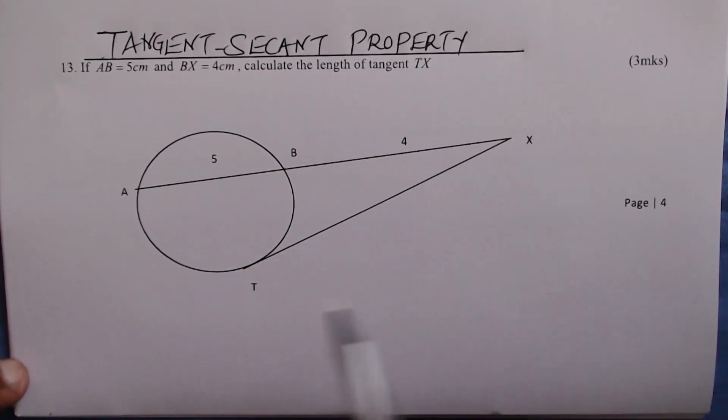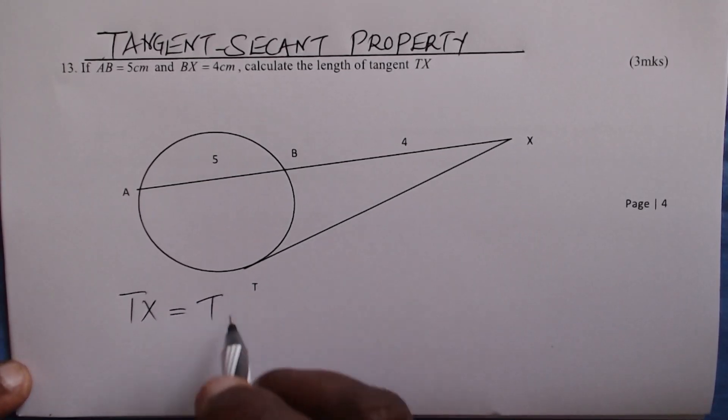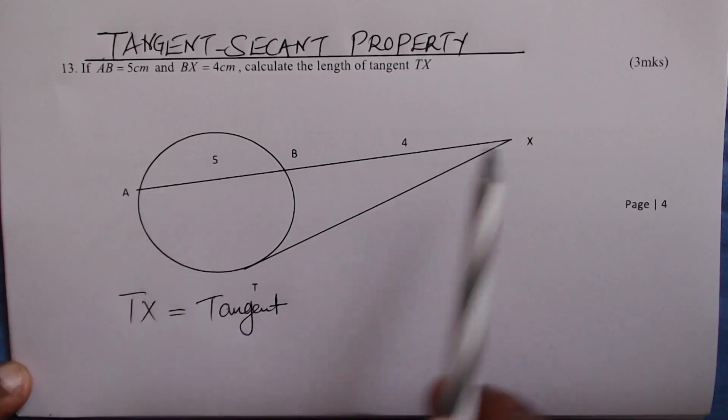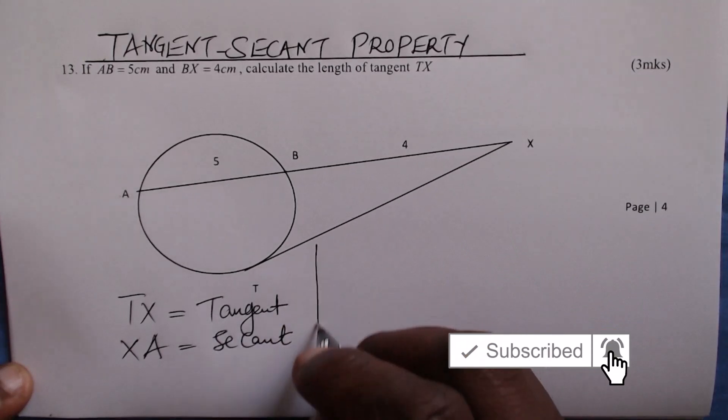TX is the tangent, which you can also write as XT. XA is called a secant. That's the chord that is extended. So XA is the secant.